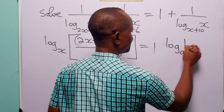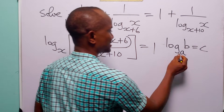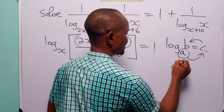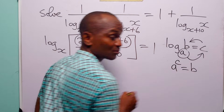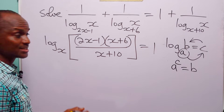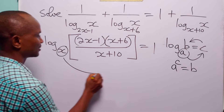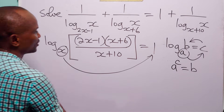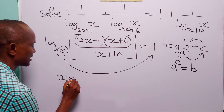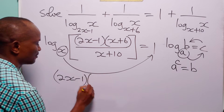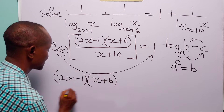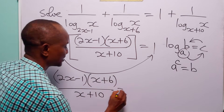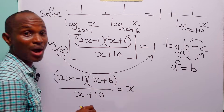Now remember that when we have log to base a of b equals c, this simply means that a to the power c is equal to b. So looking at our equation, x to the power 1 equals the argument, meaning this equation becomes: (2x minus 1) multiplied by (x plus 6) divided by (x plus 10) is equal to x.